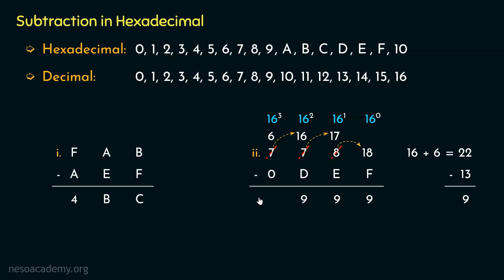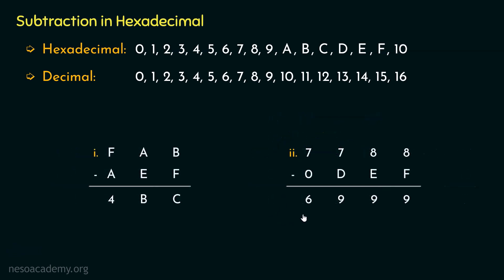Focus on the most significant digits. We have 6 in the minuend and 0 as the subtrahend, so clearly we will have 6. The result of 7788 minus 0DEF is 6999.